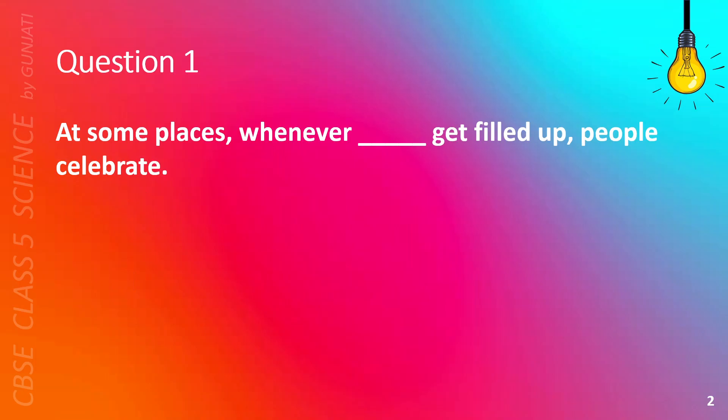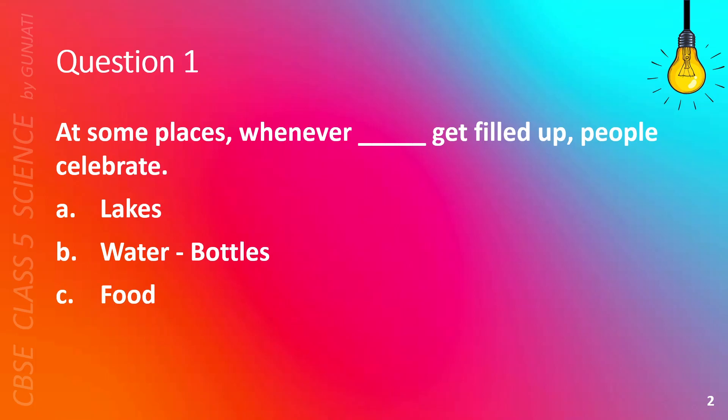Question 1. At some places, whenever blanks get filled up, people celebrate. A. Lakes, B. Water Bottles, C. Food, or D. Plants. The correct answer is A. Lakes.